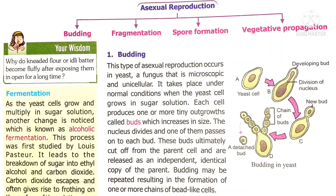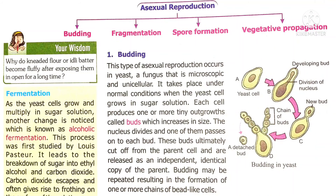This process was discovered by Louis Pasteur. How does it happen? The yeast breaks down the sugar compound into ethanol as well as carbon dioxide. Each cell of yeast produces one or more tiny outgrowths called buds, which increase in size over time. The nucleus divides into many nuclei and is distributed to each bud, so each bud contains a single nucleus. Thus it forms new individuals. These buds ultimately detach from the parent cell and live independently.